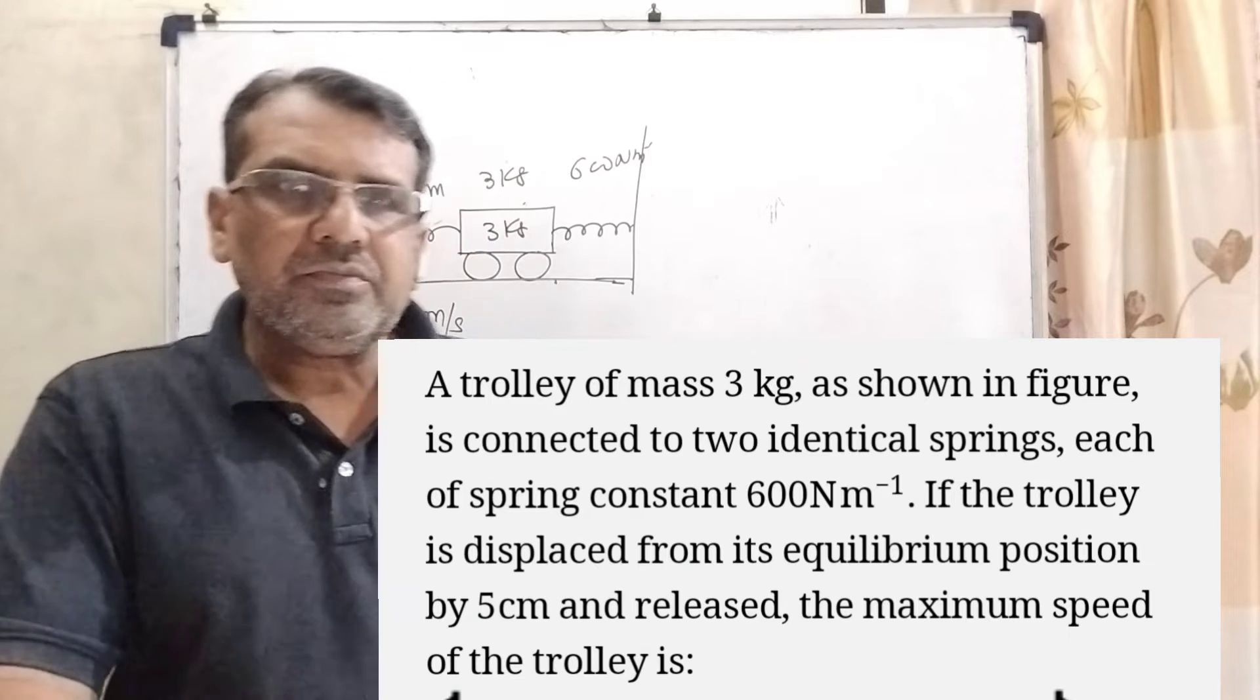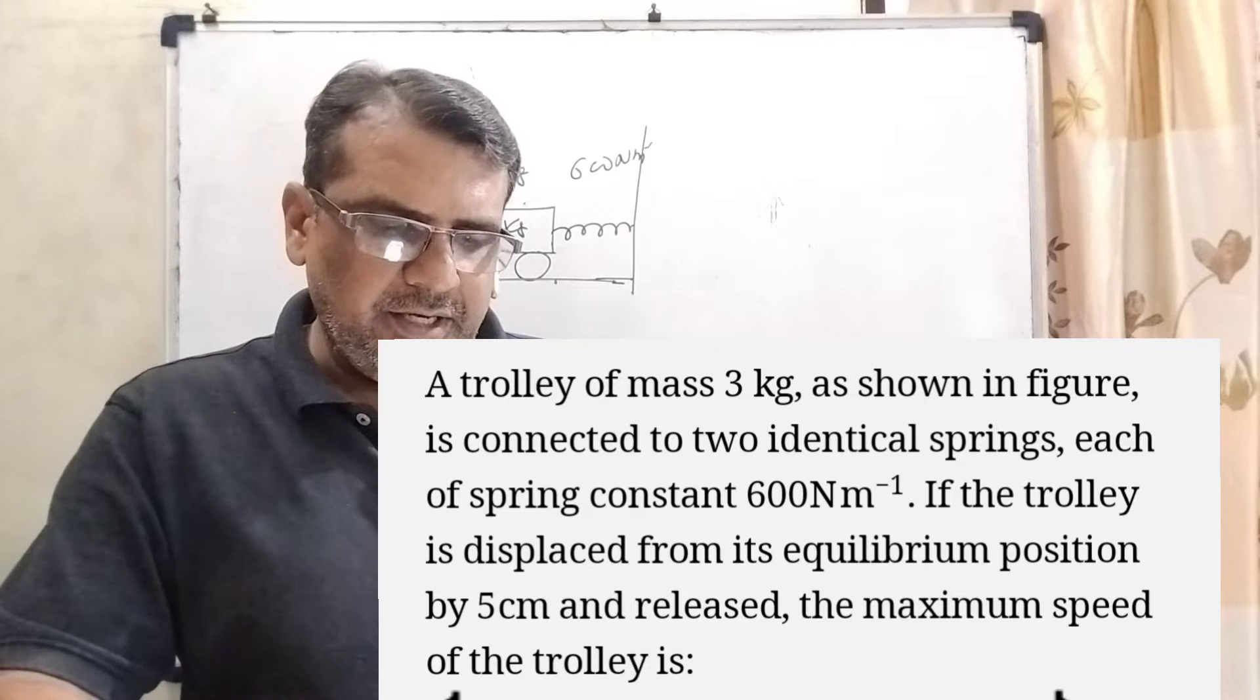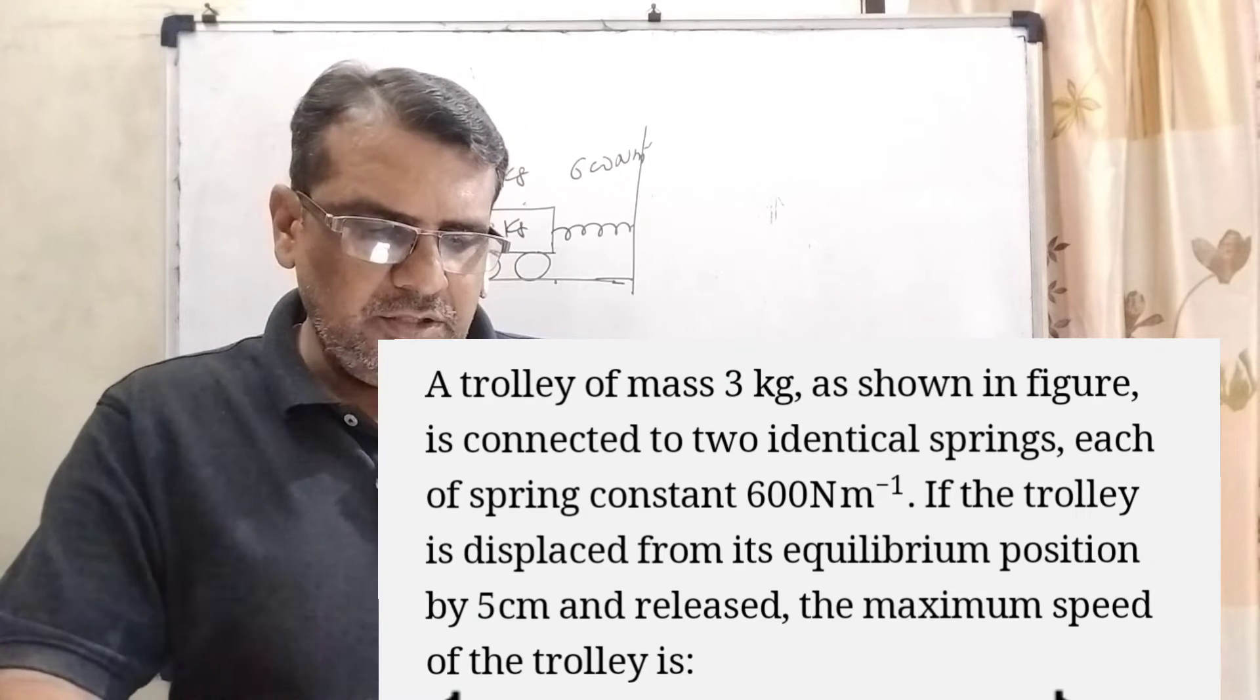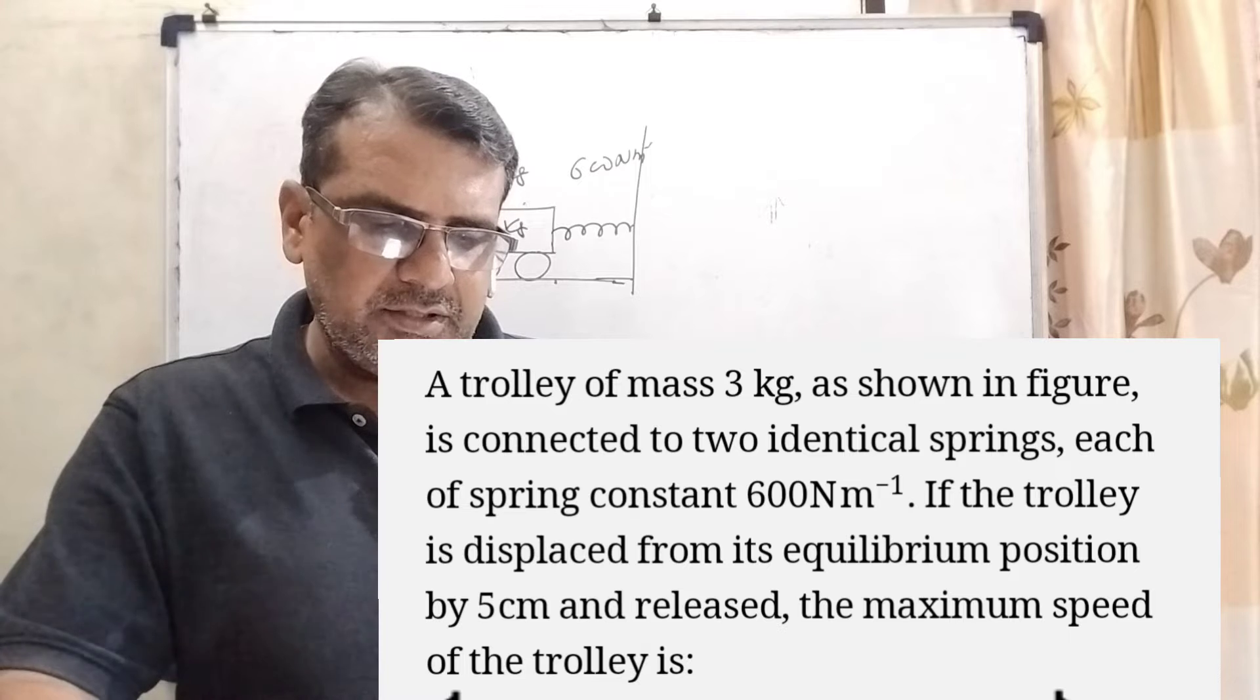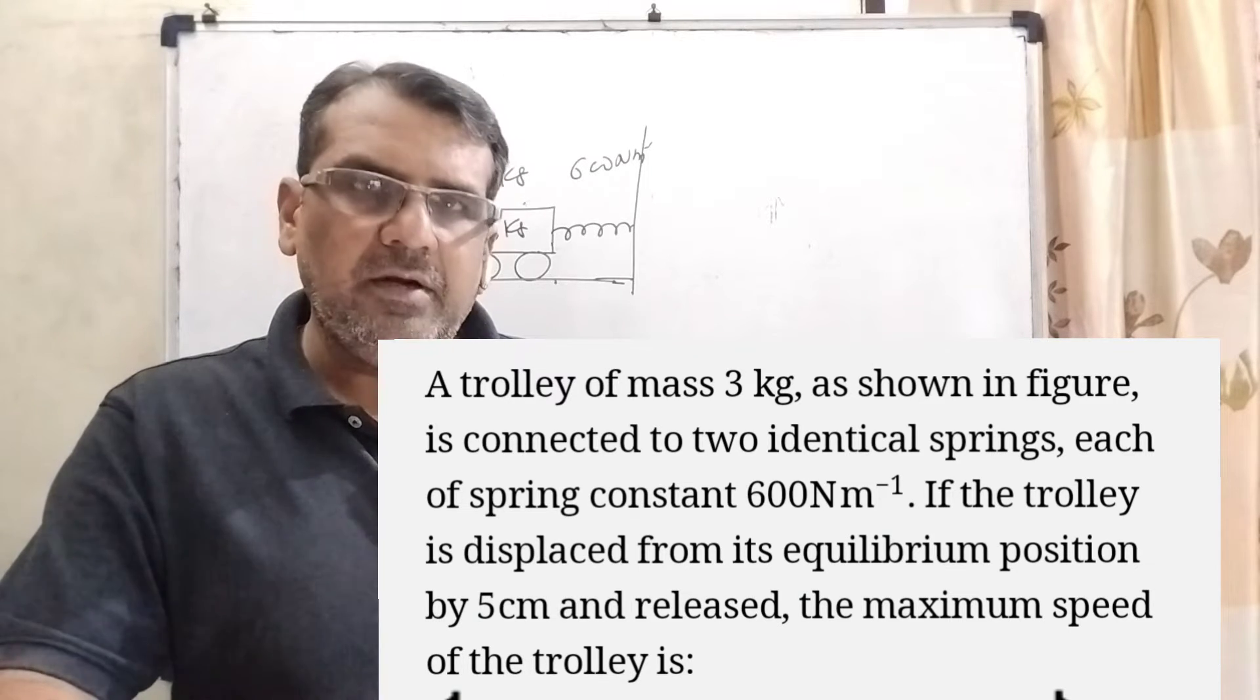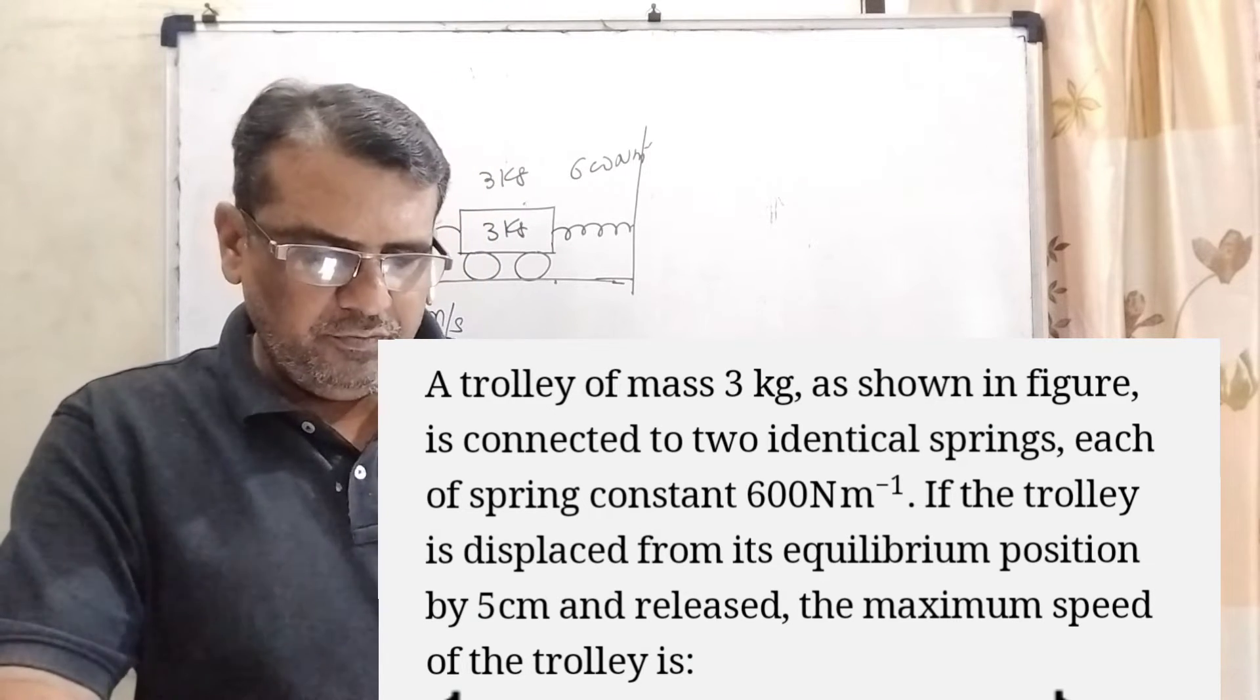Now here is the question. A trolley of mass 3 kg as shown in the figure is connected to two identical springs, each of spring constant 600 N per meter. If the trolley is displaced from its equilibrium position by 5 cm and released, the maximum speed of the trolley is: